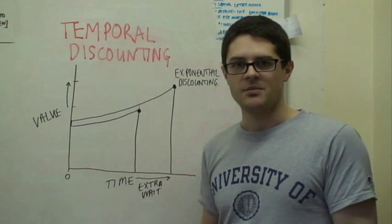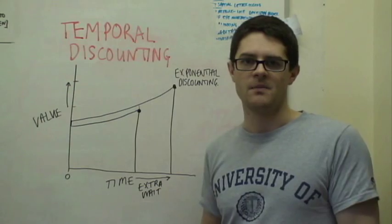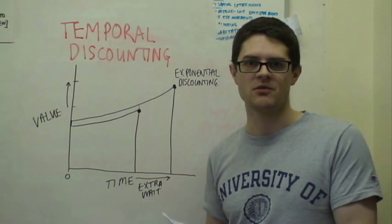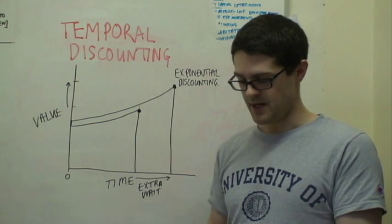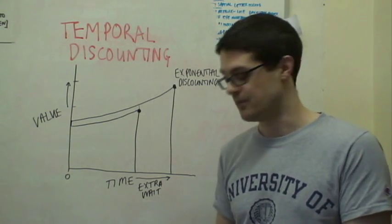So what actually happens is people reverse their preferences over time. Now, this is where we get the descriptive model.